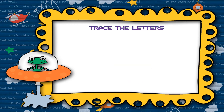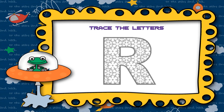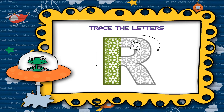Now, let's learn how to trace letter R. For capital R, start from the top and draw a straight line down. Then going to the top again, draw a curve to the middle. Continuing, draw a slanted line down.